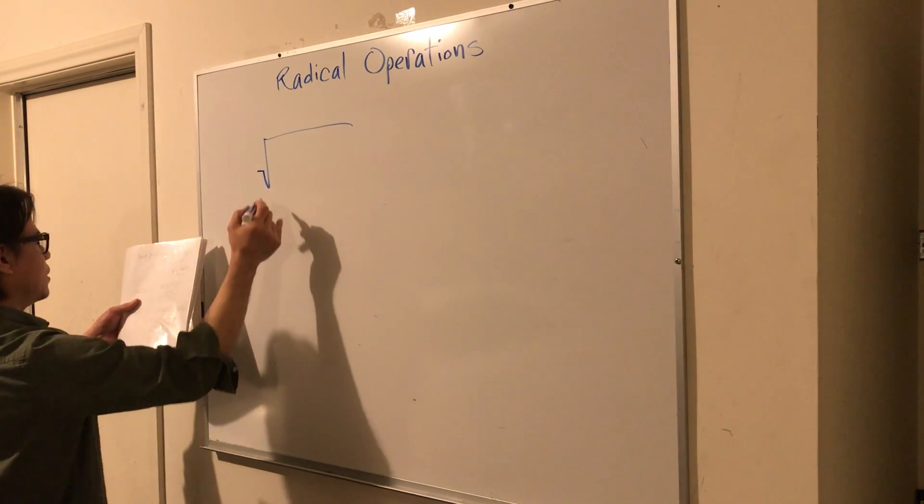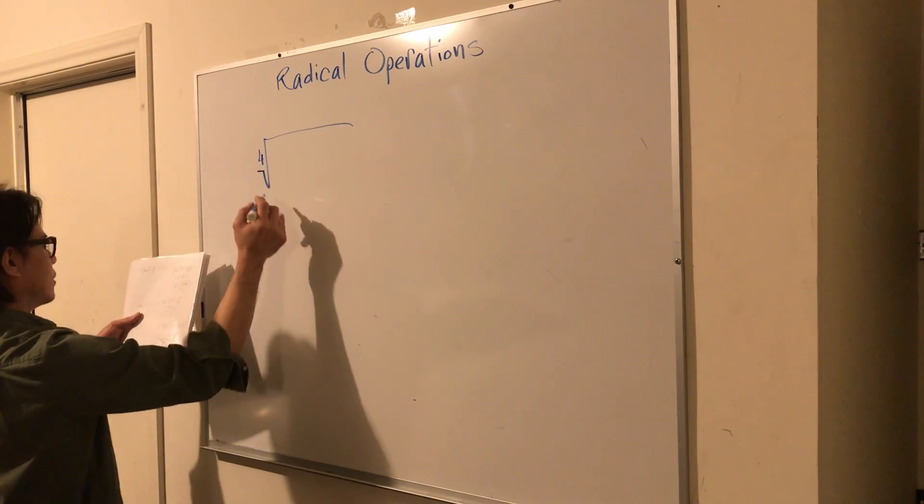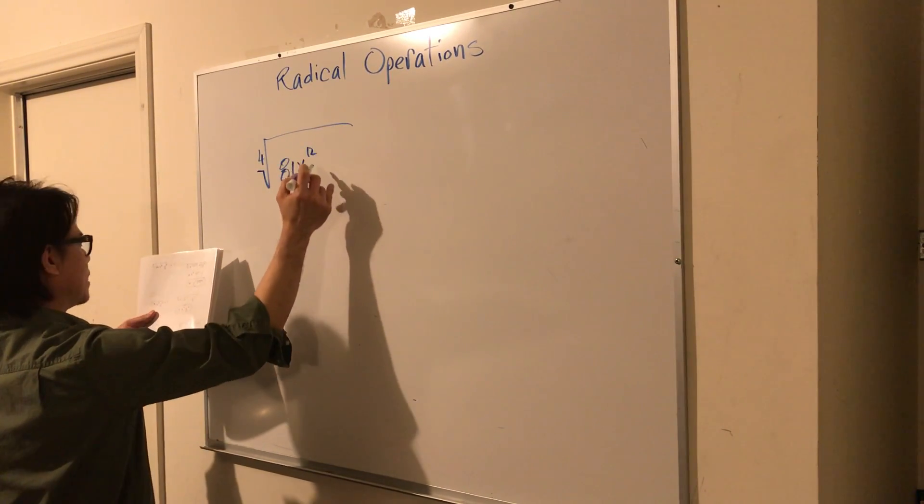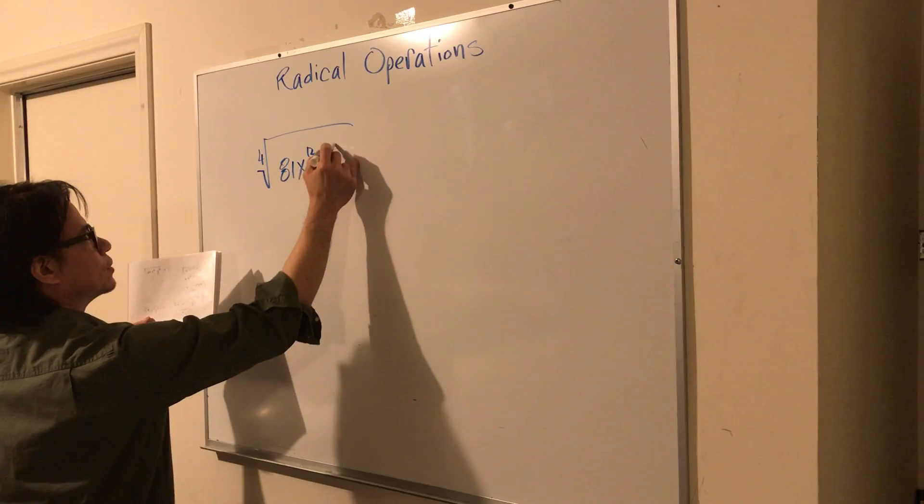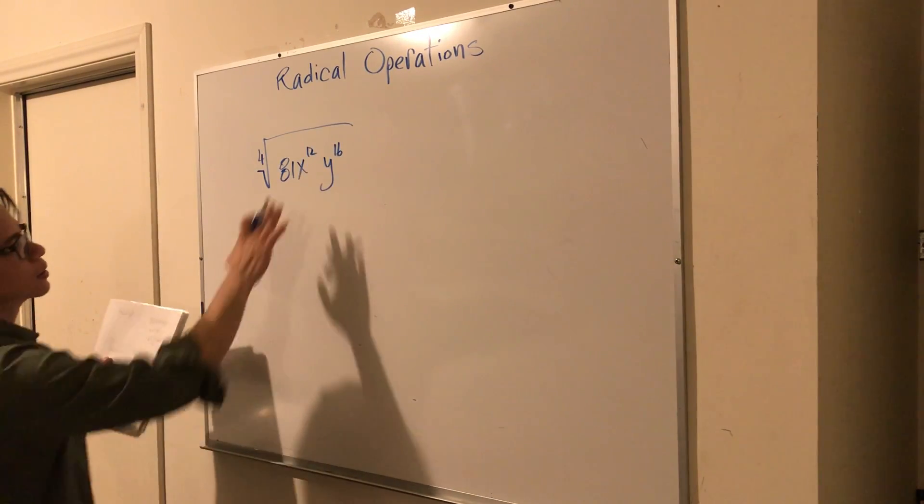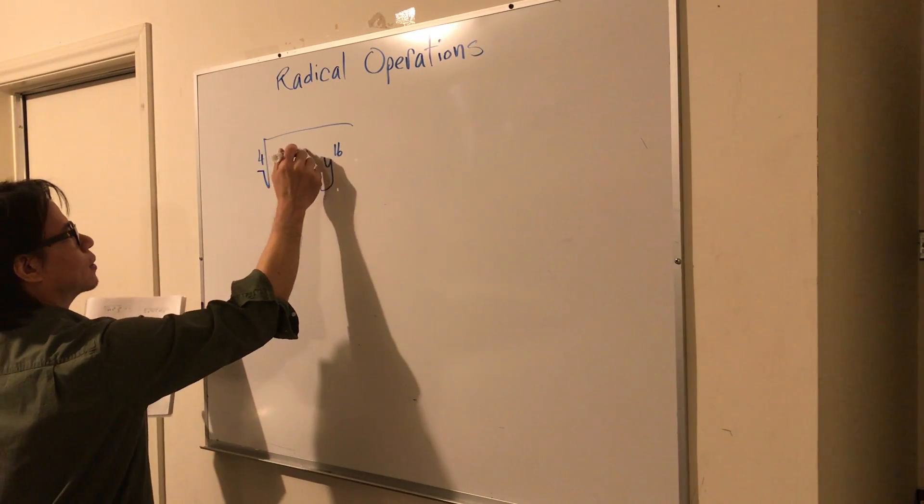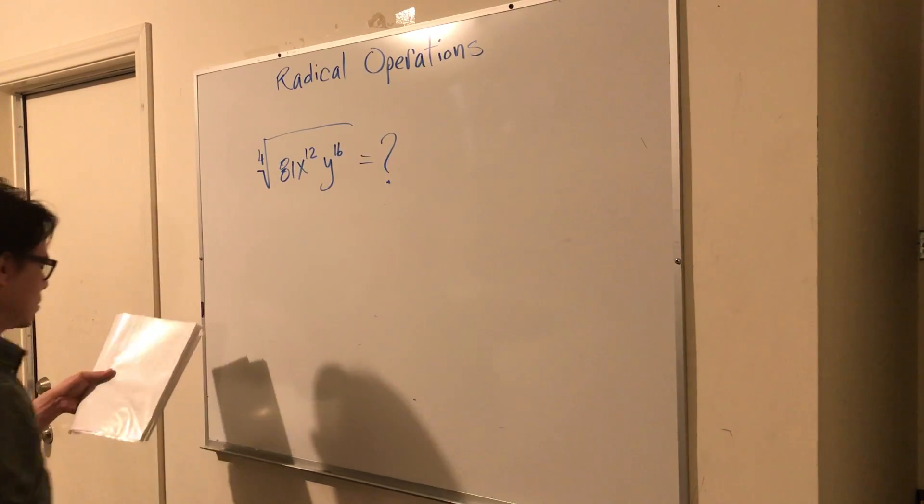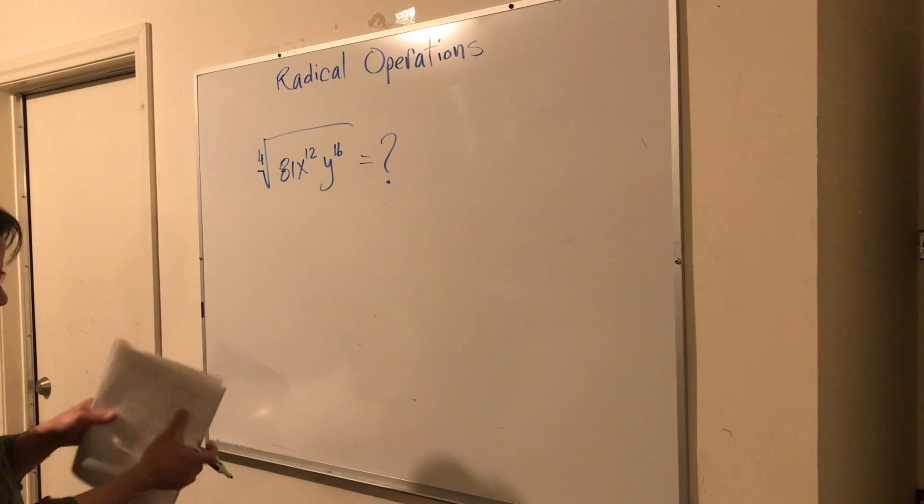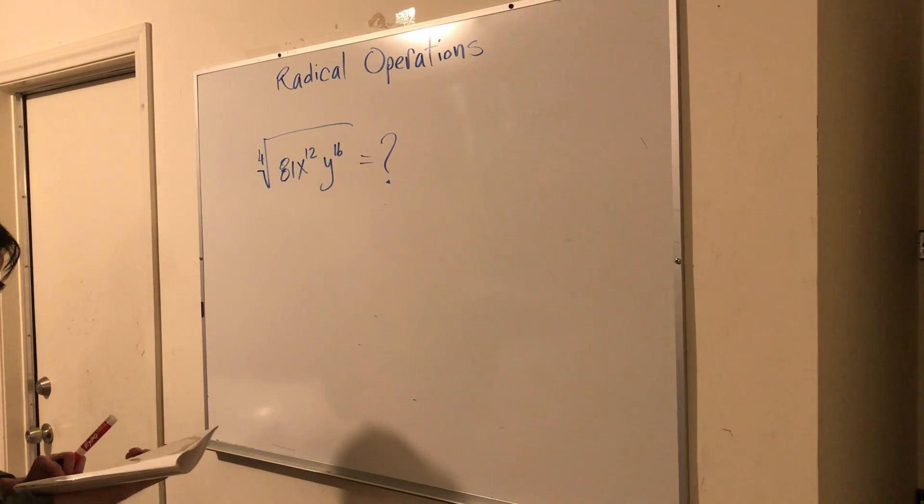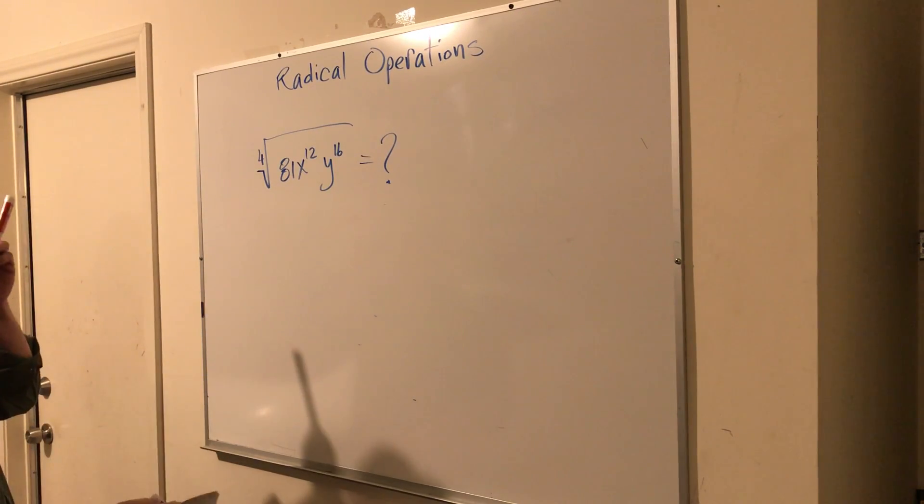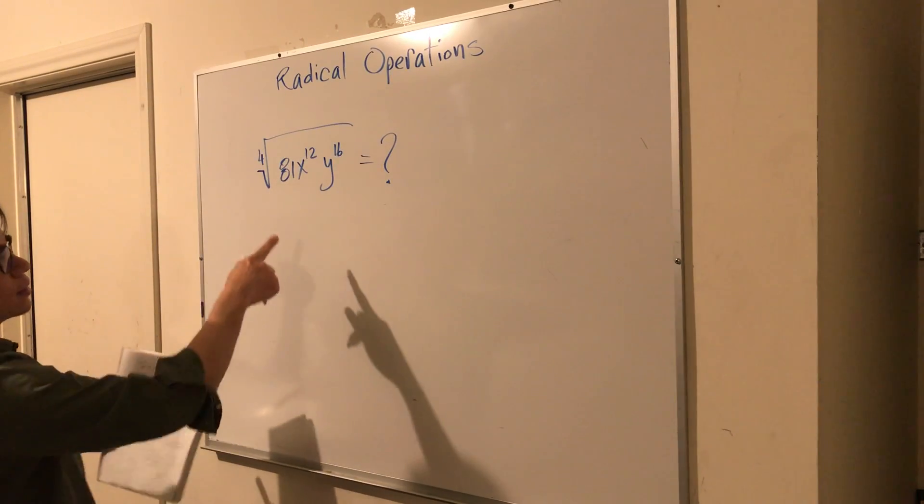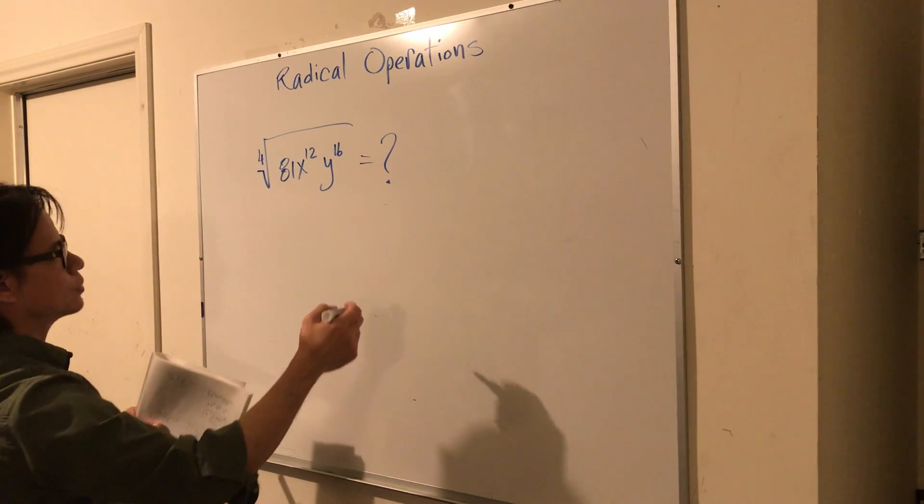So here we have the fourth root of 81x to the 12th power y to the 16th. What would you get if we tried to work this out? So let's break this down into three components.